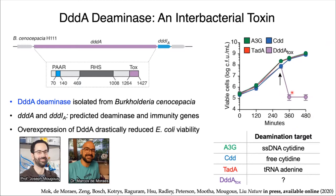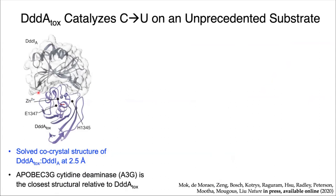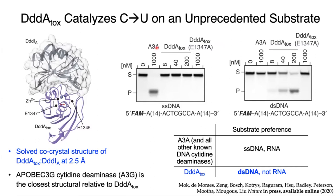This result suggested that the substrate of DddA could be very different from those of previously characterized deaminases. To define the substrate scope of DddA, the team solved the crystal structure of the deaminase toxin shown in purple, along with its antitoxin protein shown in gray. In true structural homology studies, they found that APOBEC3G was the closest structural relative to DddA. Using APOBEC3A as a proxy for A3G, they performed in vitro deamination assays. A3A deaminated single-stranded DNA but not double-stranded DNA, and what was unusual was that DddA had no activity on single-stranded DNA but operated only on double-stranded DNA — a feature not reported for any known cytidine deaminases.